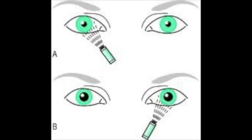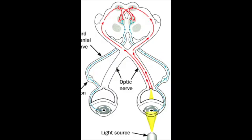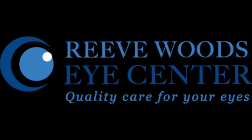In summary, an afferent pupillary defect is a clinical sign found by technicians and providers that indicates optic nerve damage. Understanding that light causes both pupils to constrict via the midbrain and consensual pupillary response reflex arc will help you understand how to check for an APD even when one pupil is fixed and not moving at all.